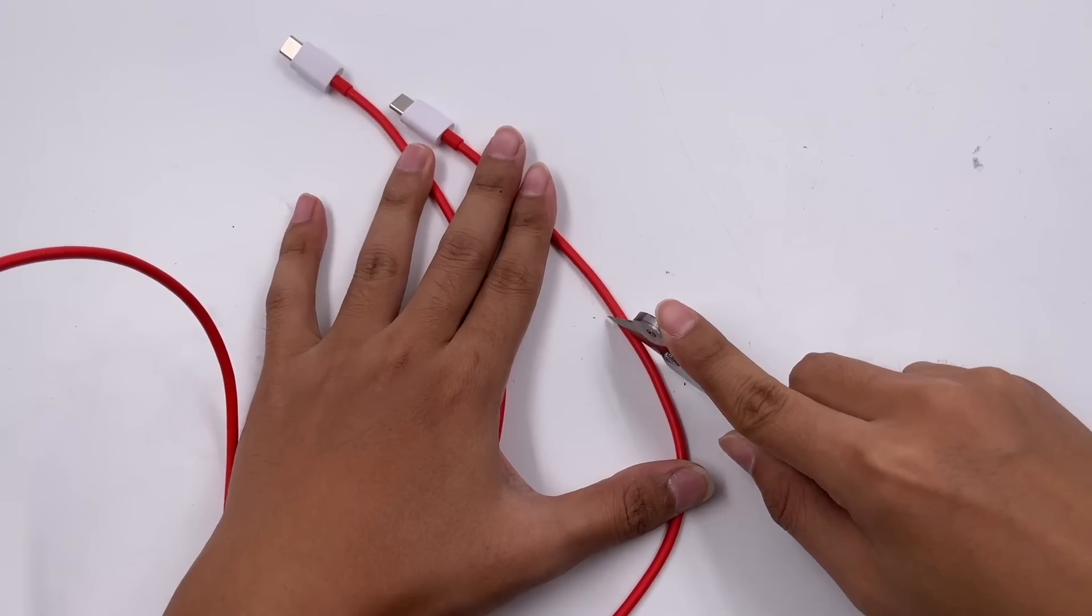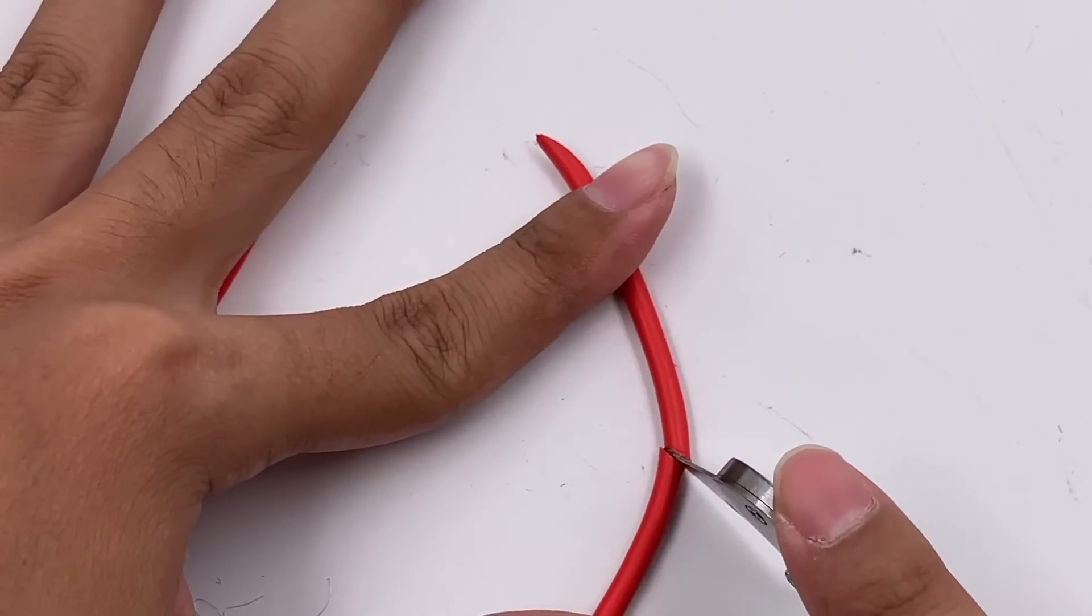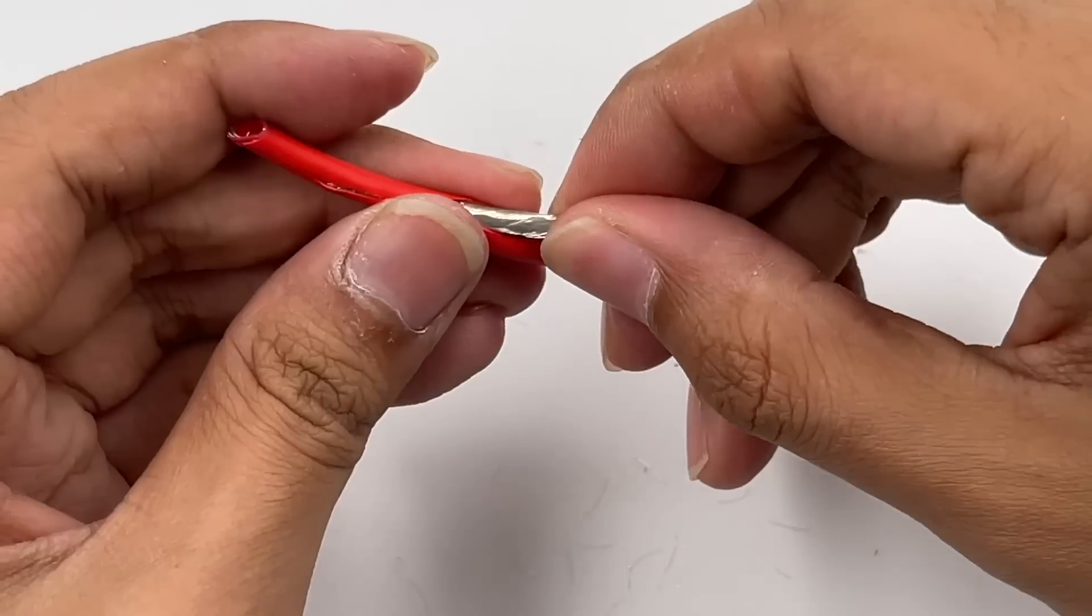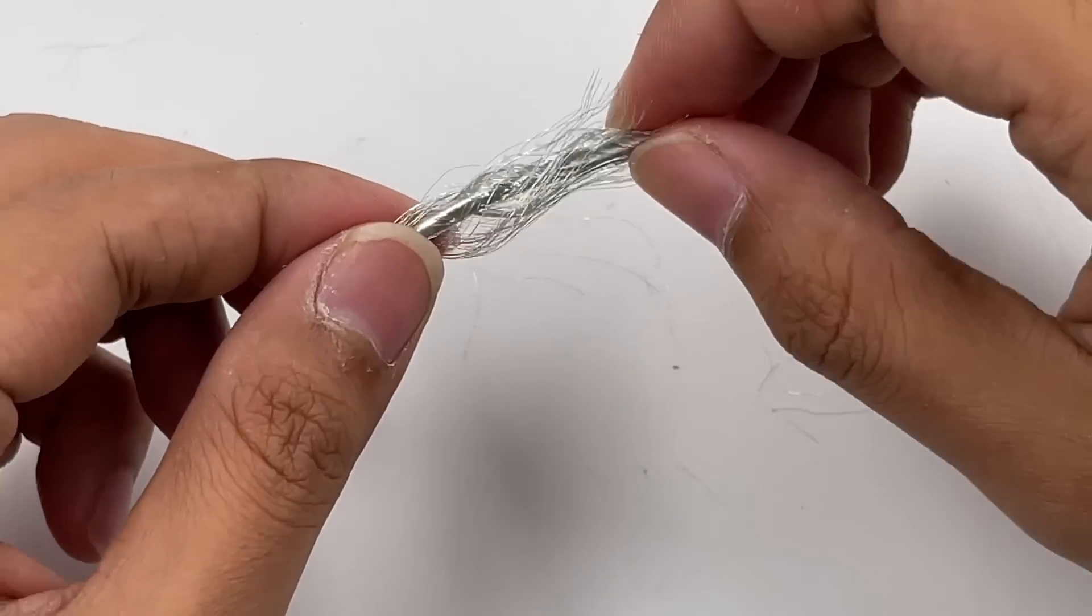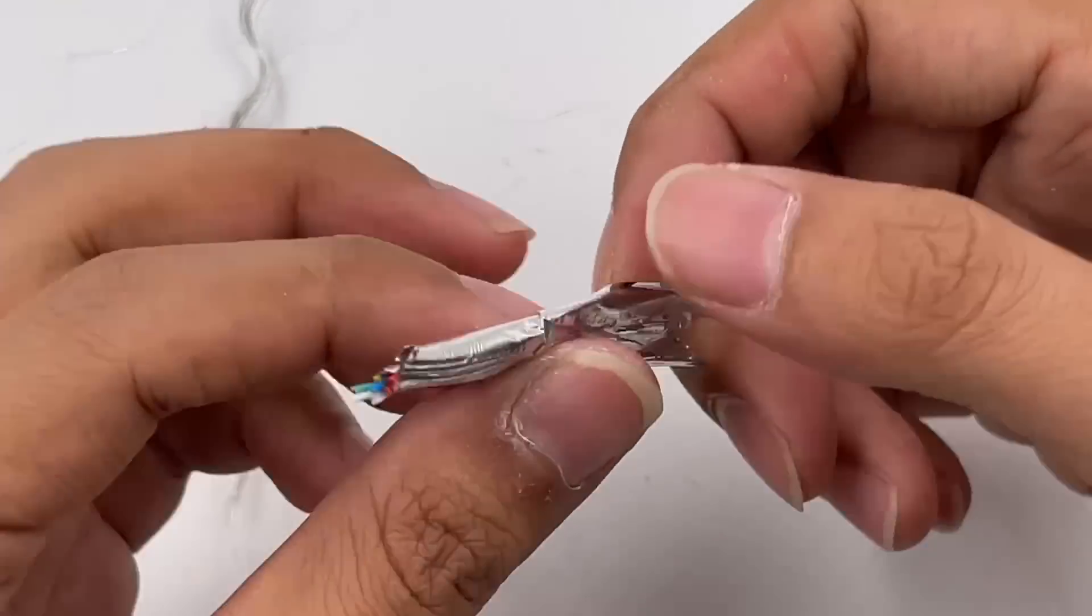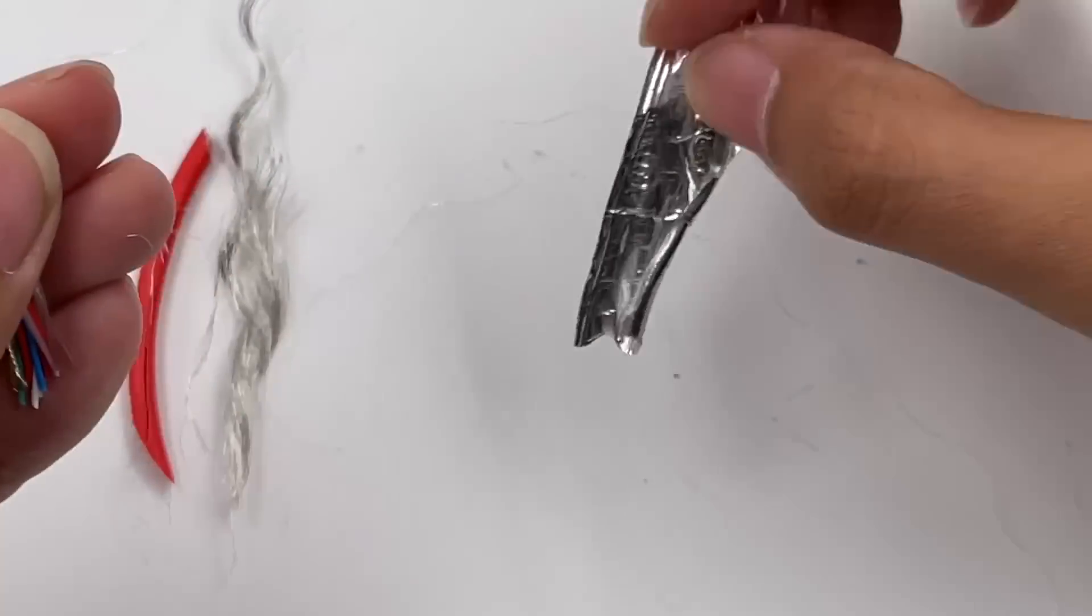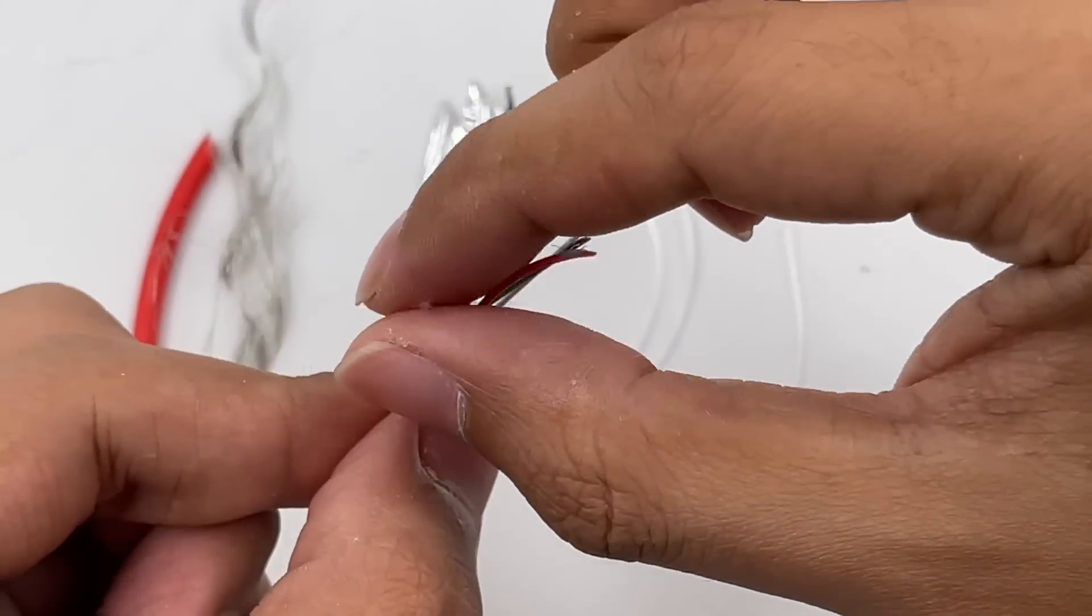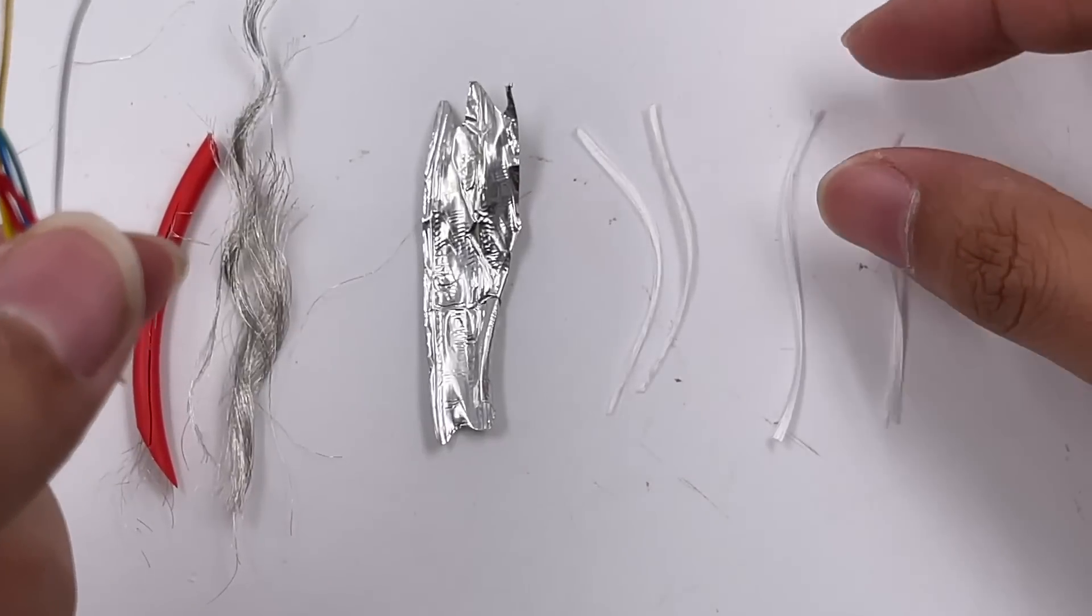Next, let's cut it off. First, let's peel off the outer red layer. Then, we can see the shielding. A layer of tin foil is under the shielding, and there are lots of different wires inside with different colors. Those white wires are nylon fibers to improve tensile strength.